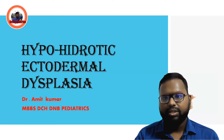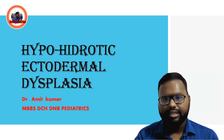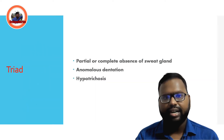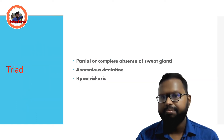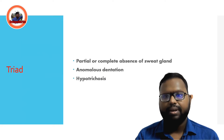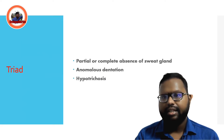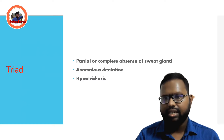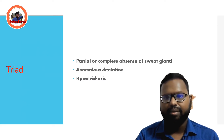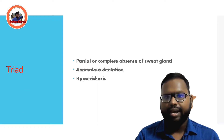You have to know some important points regarding this condition because questions are frequently asked. The triad for this condition includes: partial or complete absence of sweat glands, anomalous dentition, and hypotrichosis. These three you have to remember — one related to teeth, one related to hair, and one related to sweat glands.